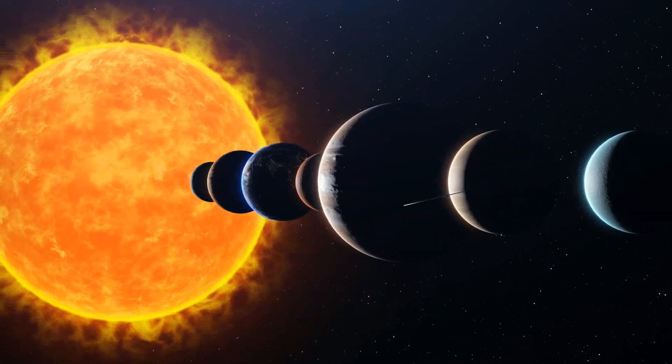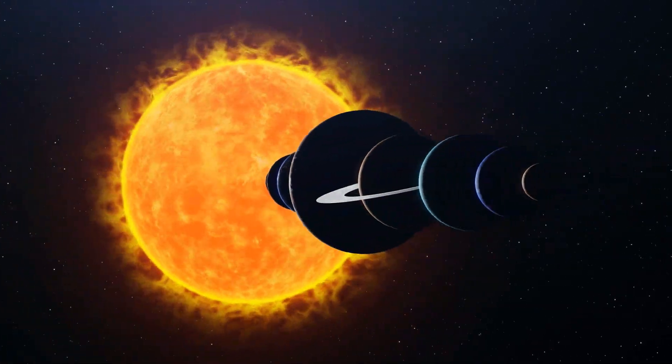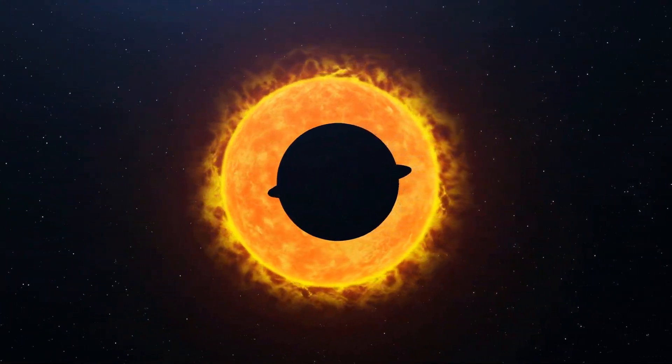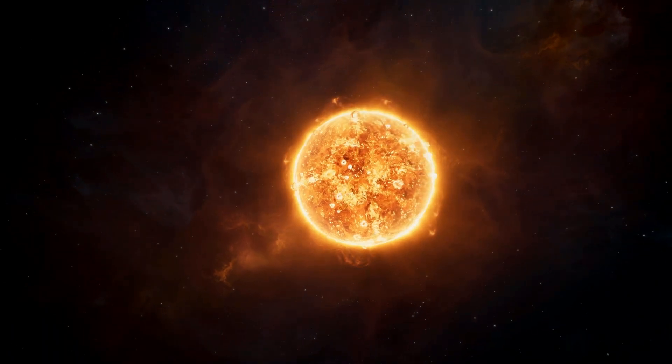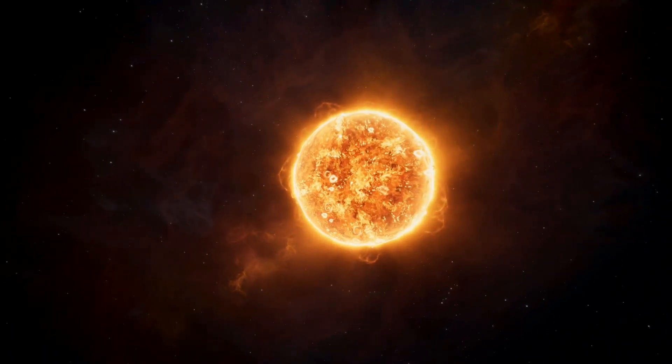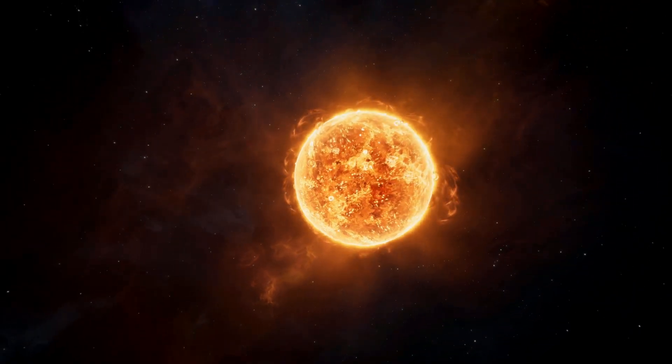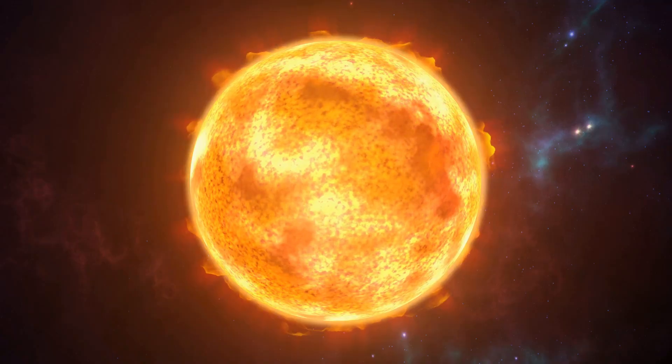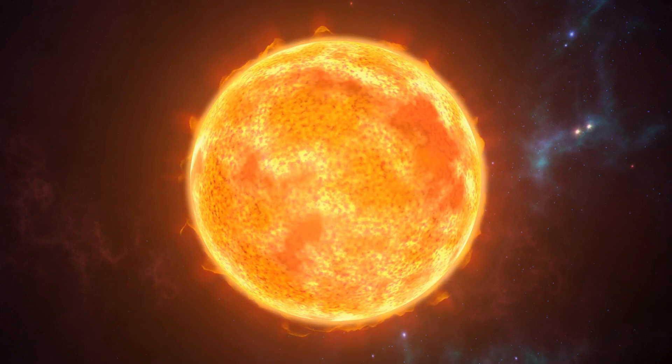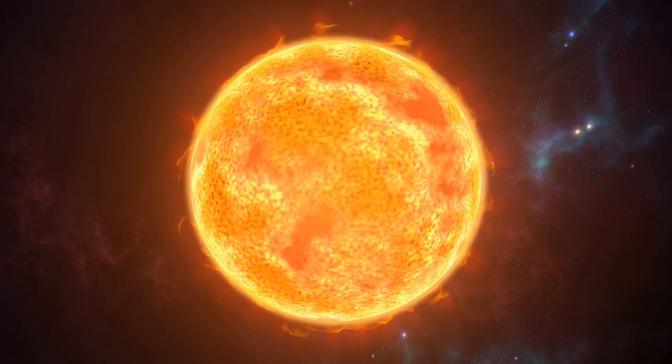The Sun's surface, known as the photosphere, has a temperature of about 10,000 degrees Fahrenheit. From the surface extends the Sun's atmosphere, consisting of the chromosphere and the corona. The corona, the outermost layer, can reach temperatures of over a million degrees Fahrenheit.